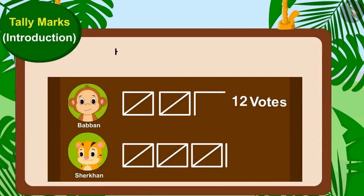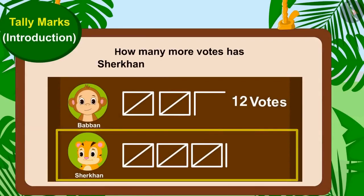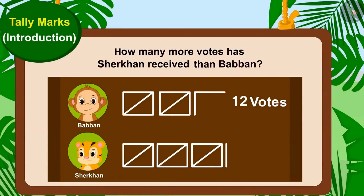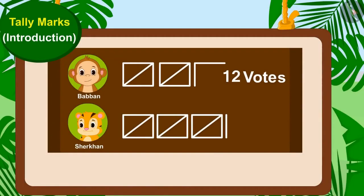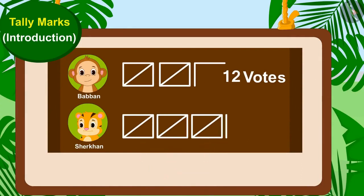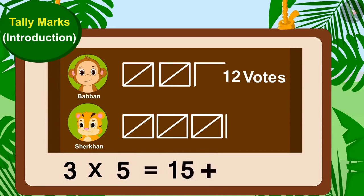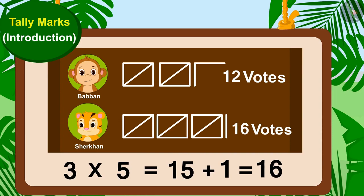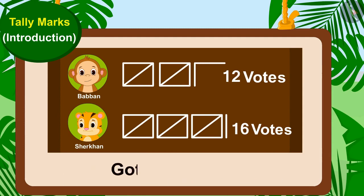Children, can you tell how many more votes Shere Khan received than Babban? Shere Khan's votes consist of three groups of tally marks and one line. Shere Khan has got three times five, fifteen, plus one — sixteen votes. And Babban has got 12 votes. This means Shere Khan has got four votes more than Babban.